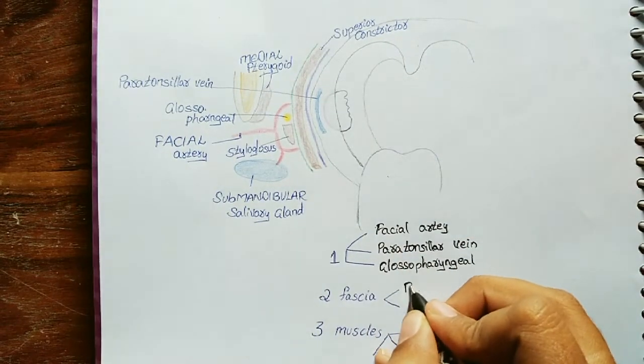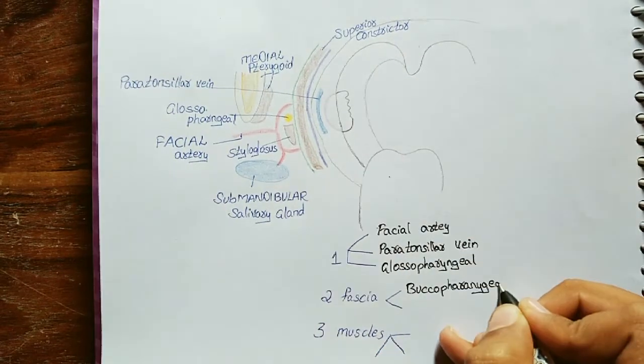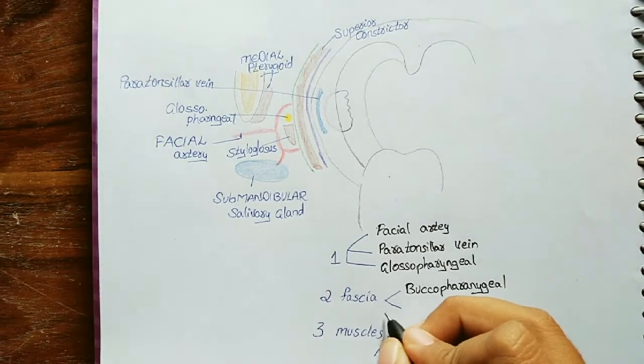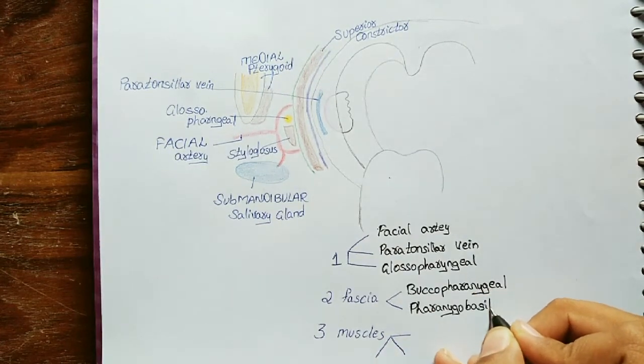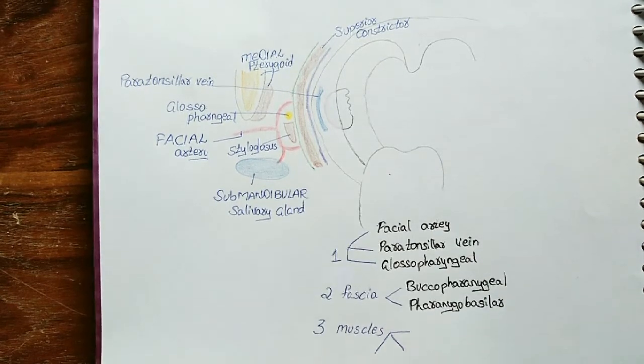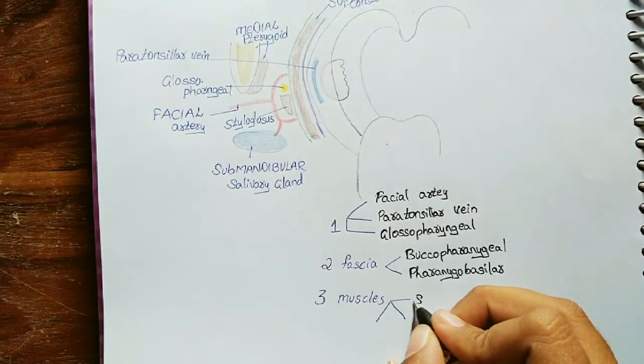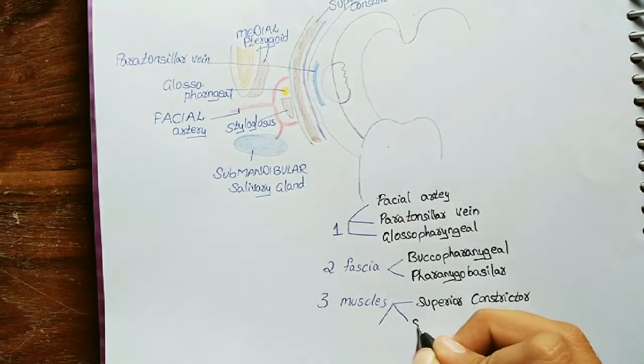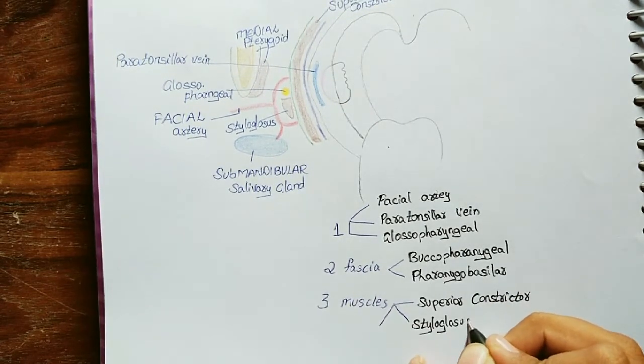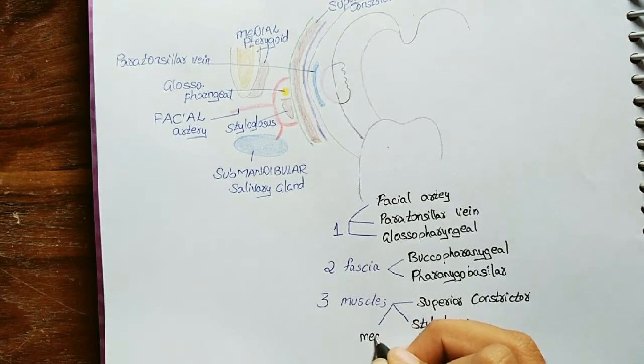That is buccopharyngeal and the second one is pharyngobasillar. And three muscles: superior constrictor, styloglossus, and medial pterygoid.